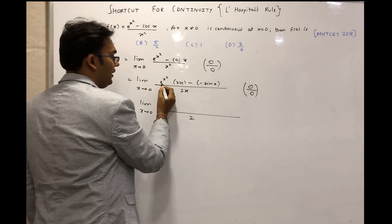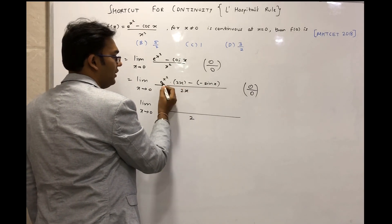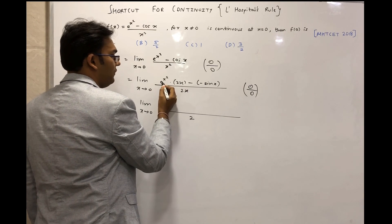Let us take u times v. Suppose this is u and this is v. So what will be the derivative of u times v?